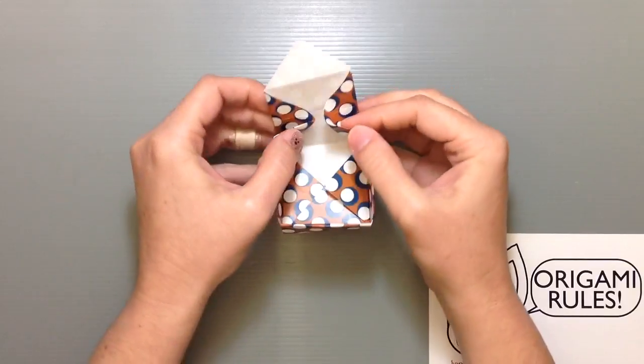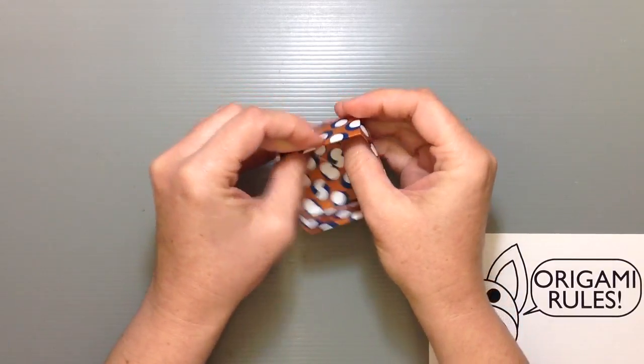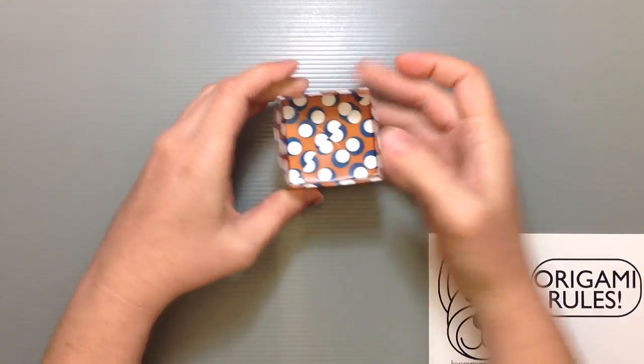Turn things around and do the same thing on this side. You've got all the creases you need. It should collapse pretty easily so that you can get a nice little box.